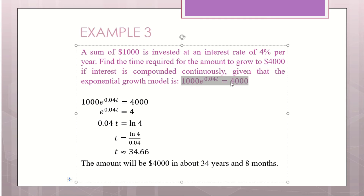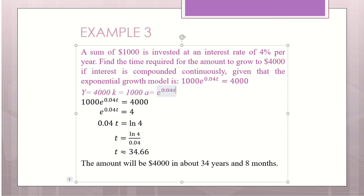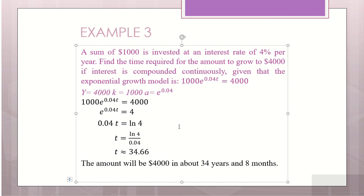In this example, the equation is already given. Y is the new value — what you want it to grow to. K is 1000. The growth factor A is e to the 0.04. In the exam, they will definitely ask you to identify the growth factor from a given formula. So your growth factor is A equals e to the 0.04 — just plug it into the calculator to get the answer.